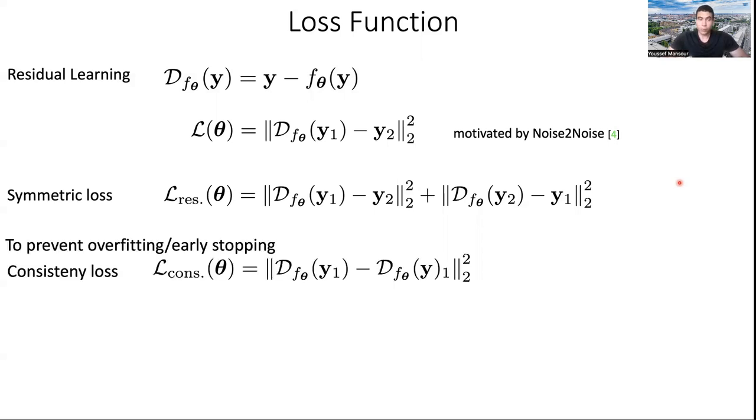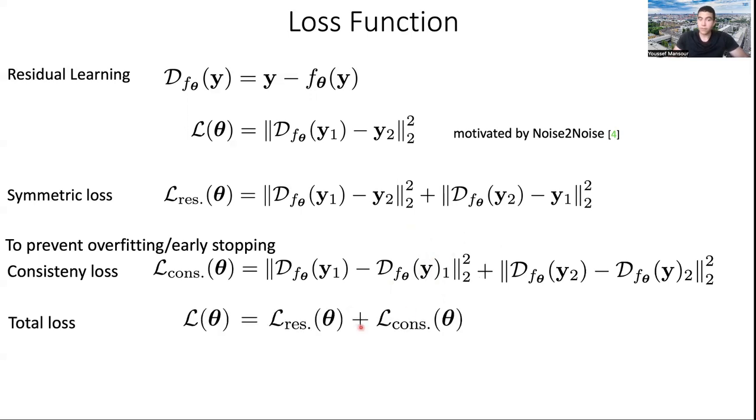But at some point you're going to overfit and the performance is going to start to decrease. And of course, you will never know when you should stop. But to overcome that, we propose the consistency loss, which prevents overfitting. And therefore, you don't need to worry. And the consistency loss is as follows. We say that downsampling the image, so Y1 here is a downsampled version of the image. You downsample the image and then you denoise it, pass it through the denoiser. It should be equivalent to first denoising the image. So Y here is the full resolution image, and then downsampling. And out of symmetry, whatever we do for Y1, we also do for Y2. Now the total loss is just the sum of both the residual and the consistency loss.